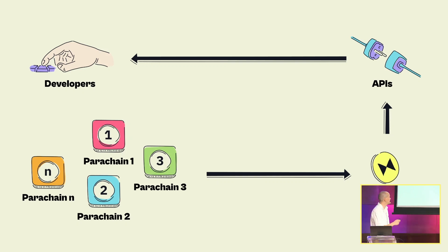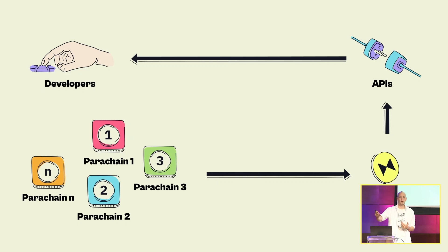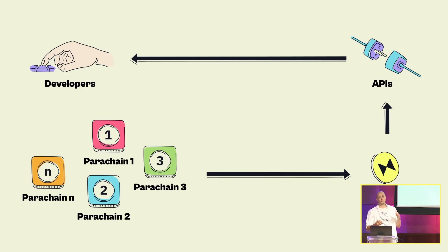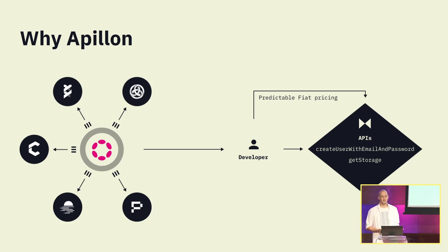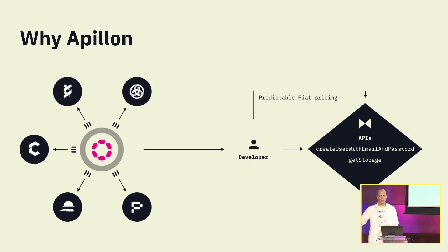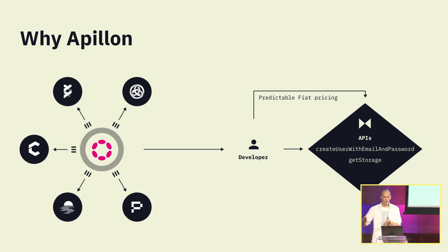What we do is integrate those parachains, take all their logic, and create a simple API layer on top. So if you want to upload files to IPFS, host your website on IPFS, or mint NFTs, you don't have to worry about holding tokens, managing wallets, setting up infrastructure, learning their code, or going through different wikis. We take care of it. A simple example: instead of managing Crust tokens and configuring an IPFS gateway yourself, you just call our API's get-storage function and seamlessly upload files to IPFS without knowing how it works in the back end.